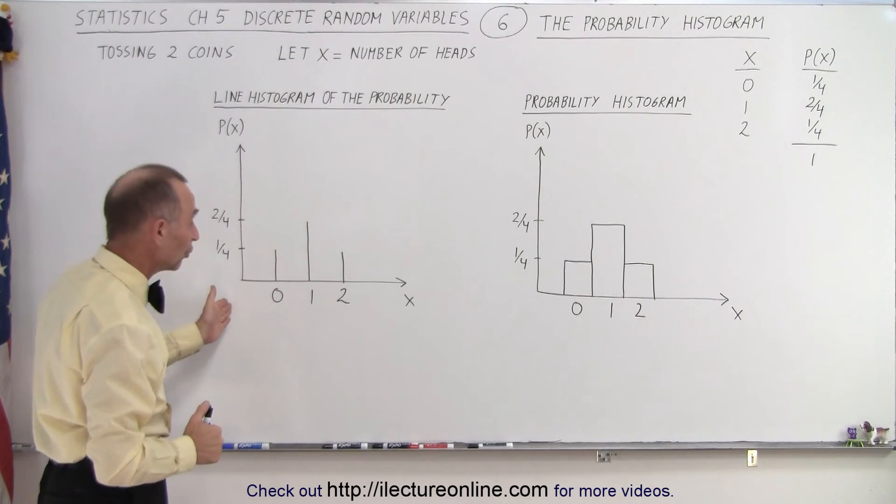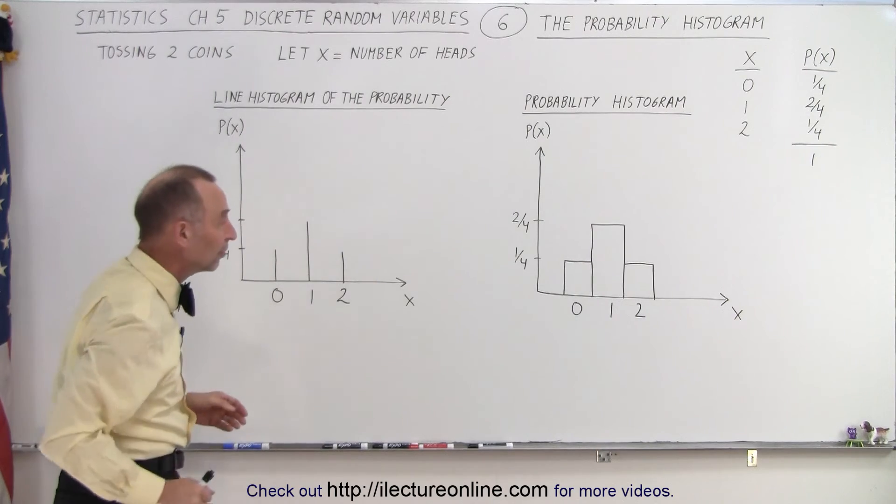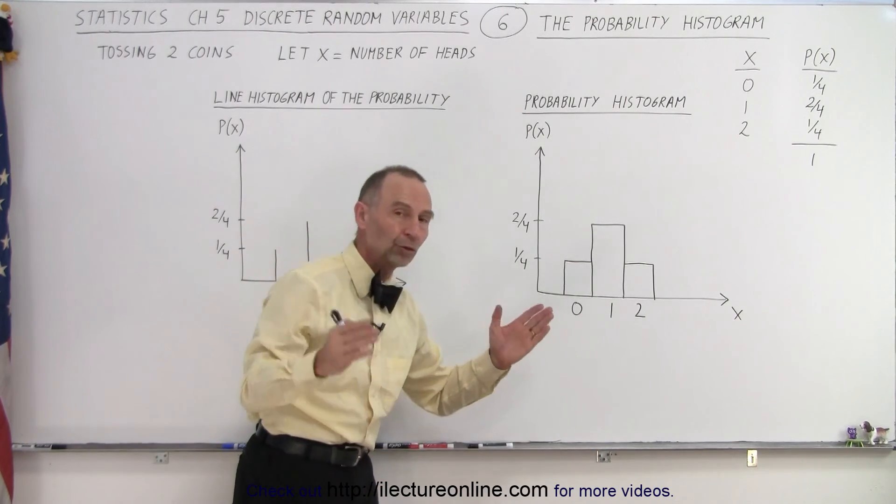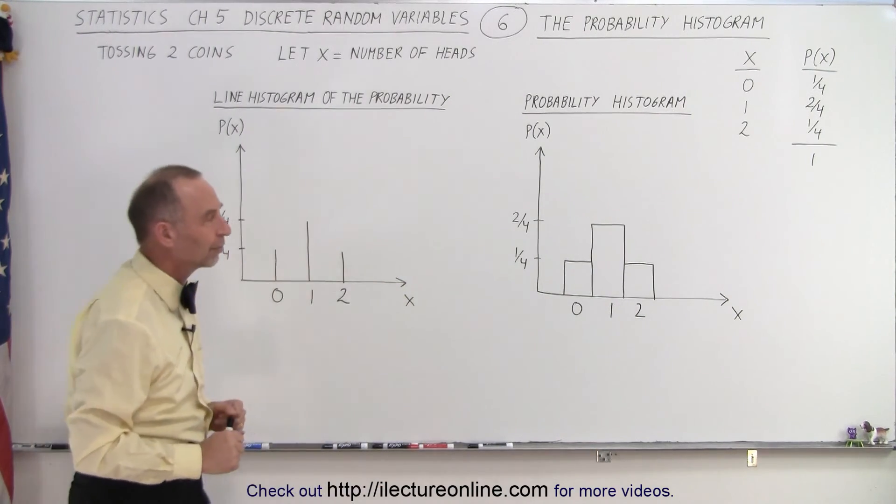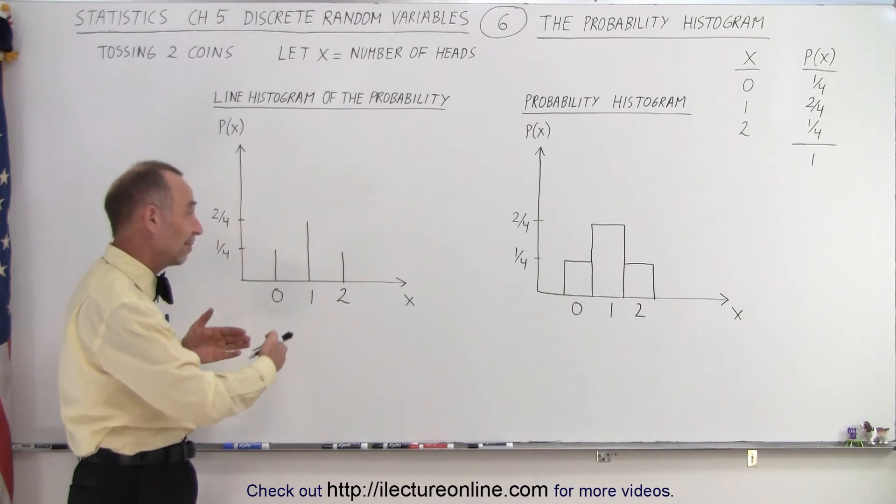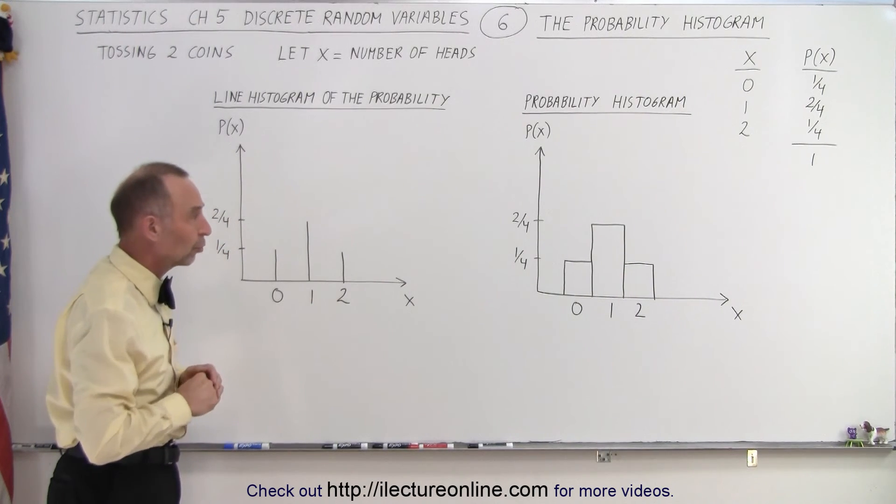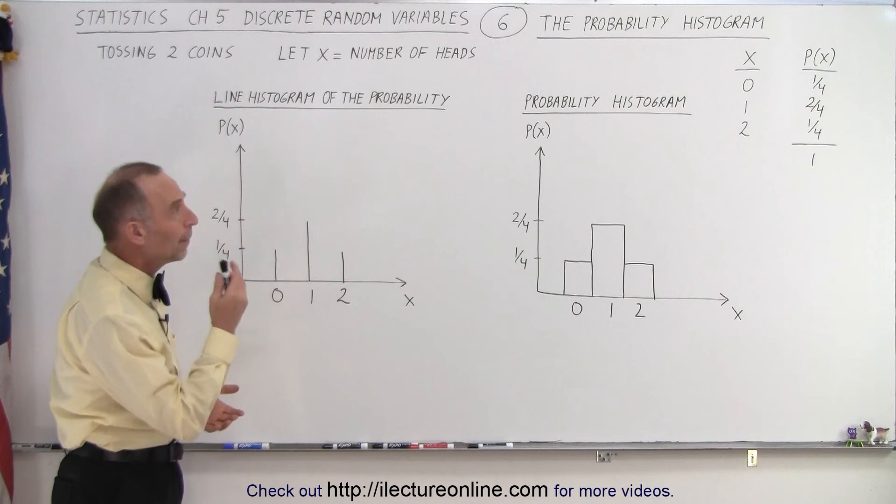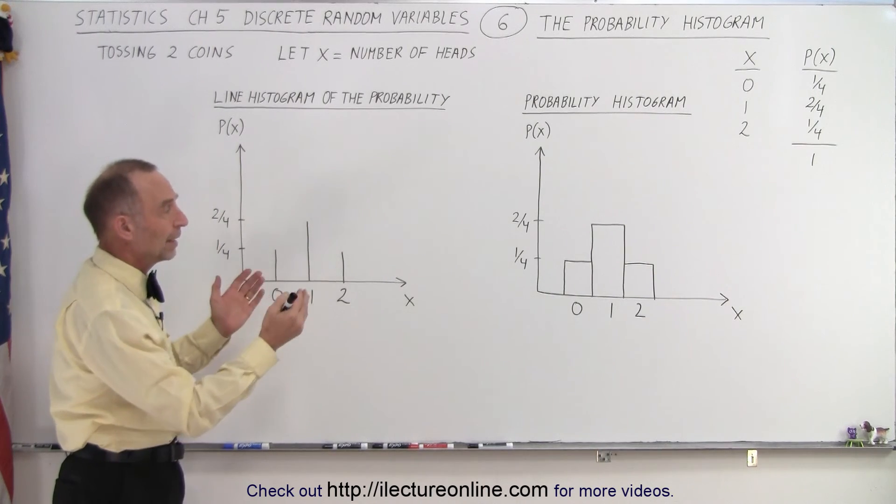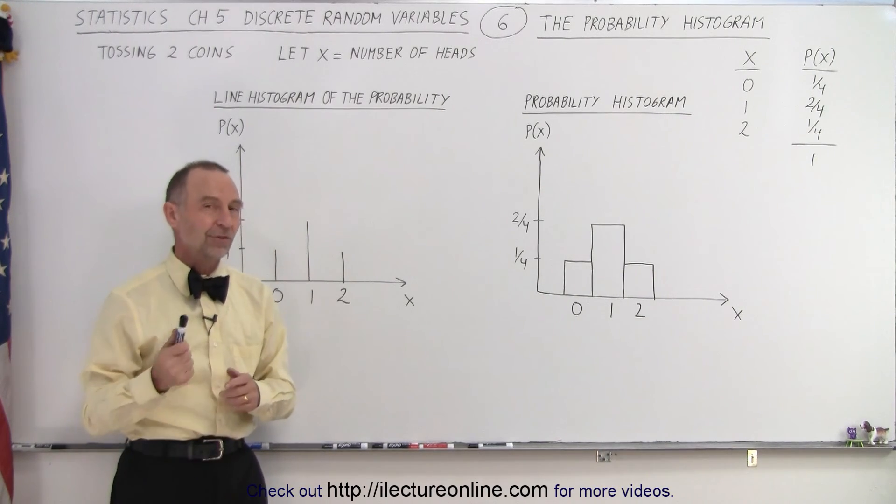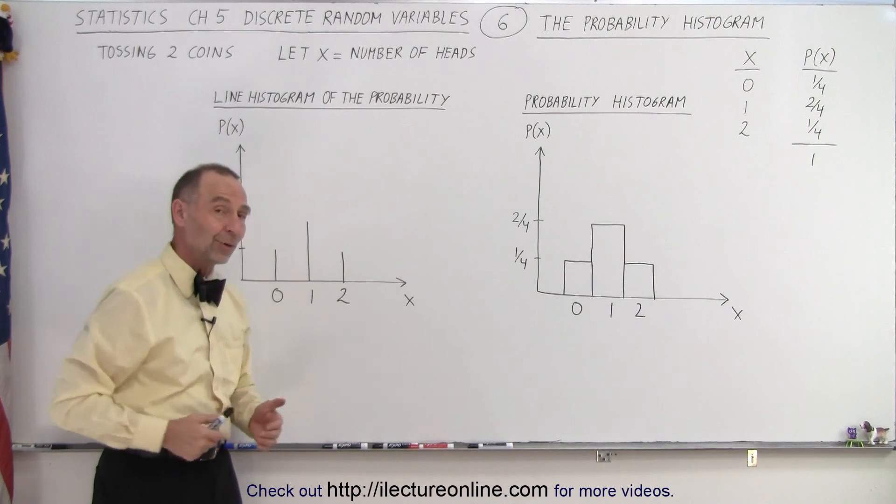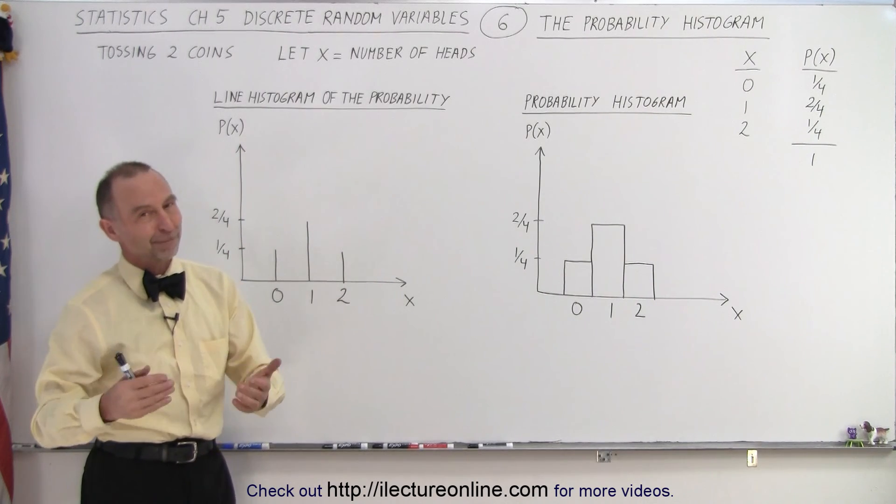This is the type you want to use if you have a lot of possibilities, and this is the type for a limited number of possibilities. It's sometimes just a choice. Either one works just as well, but the probability histogram is one of the more common graphs you'll see when dealing with discrete random variables. And that is how it's done.